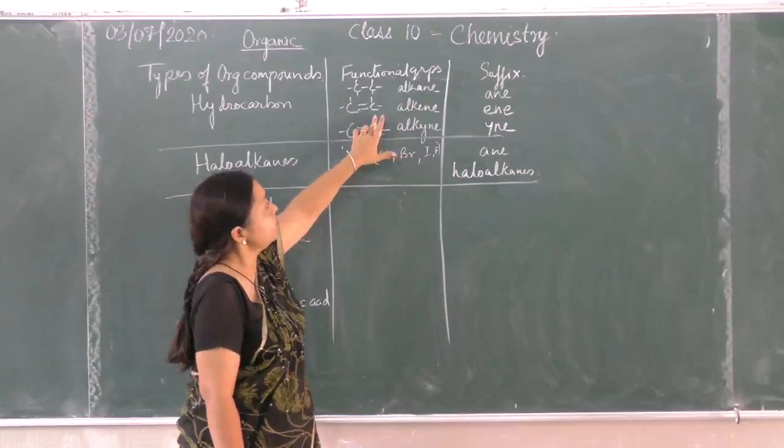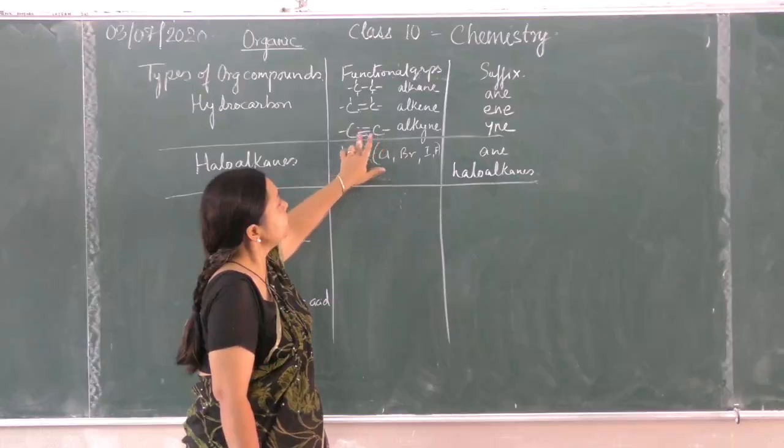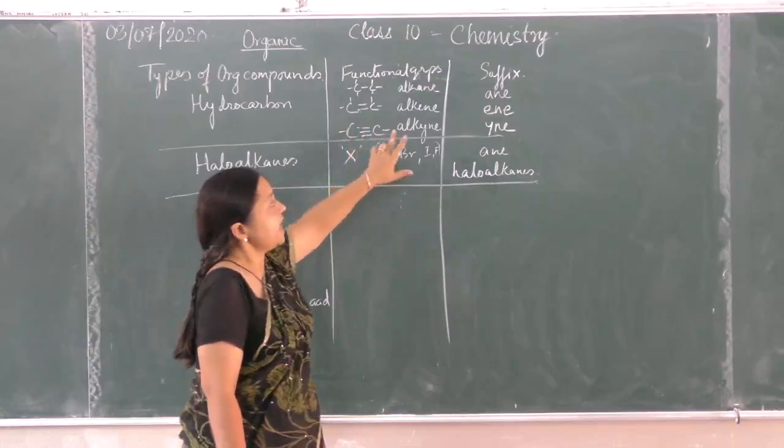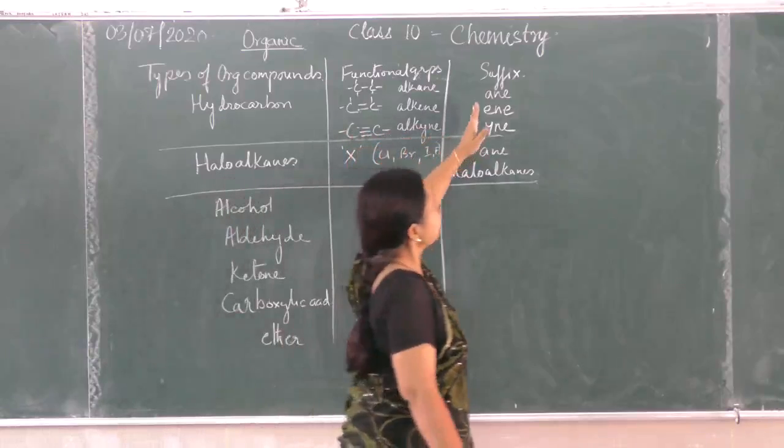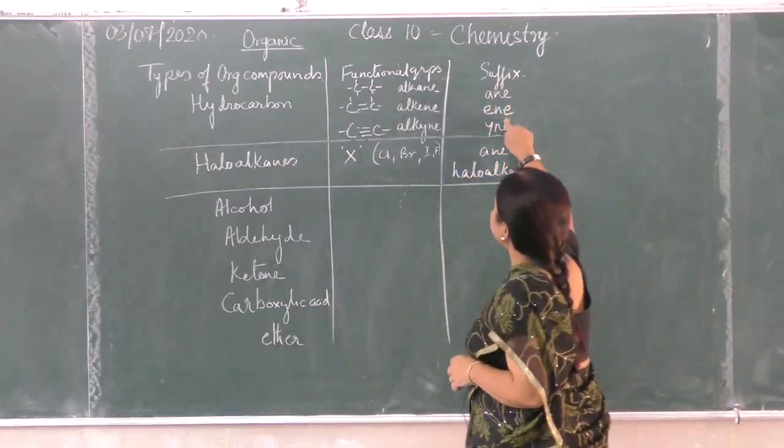If there is a triple bond between two carbon atoms, then it is called alkyne. The suffixes added are: single bond -ane, double bond -ene, triple bond -yne.